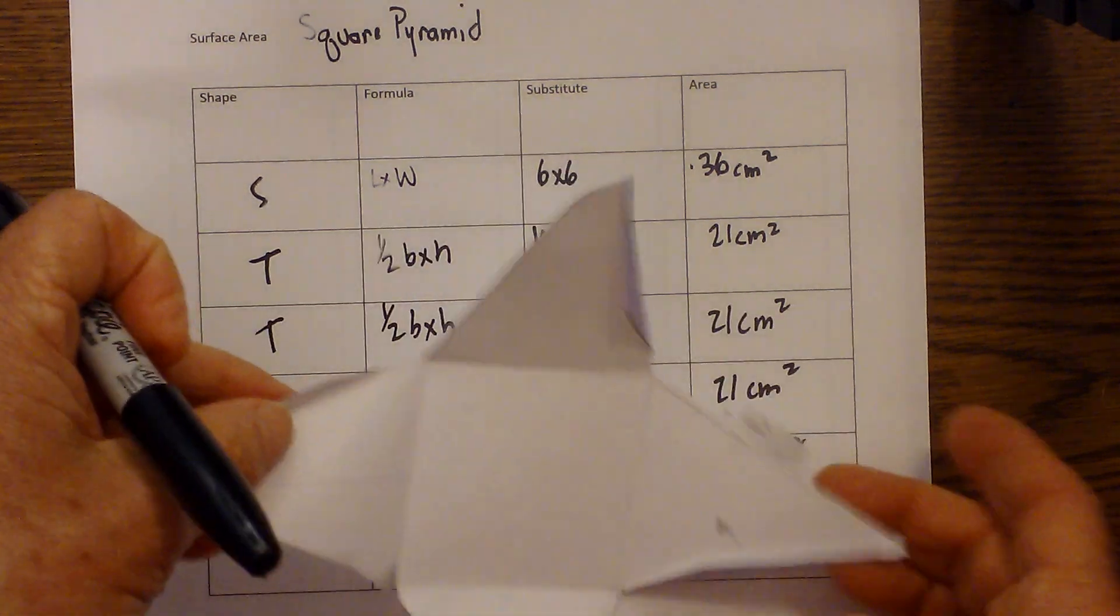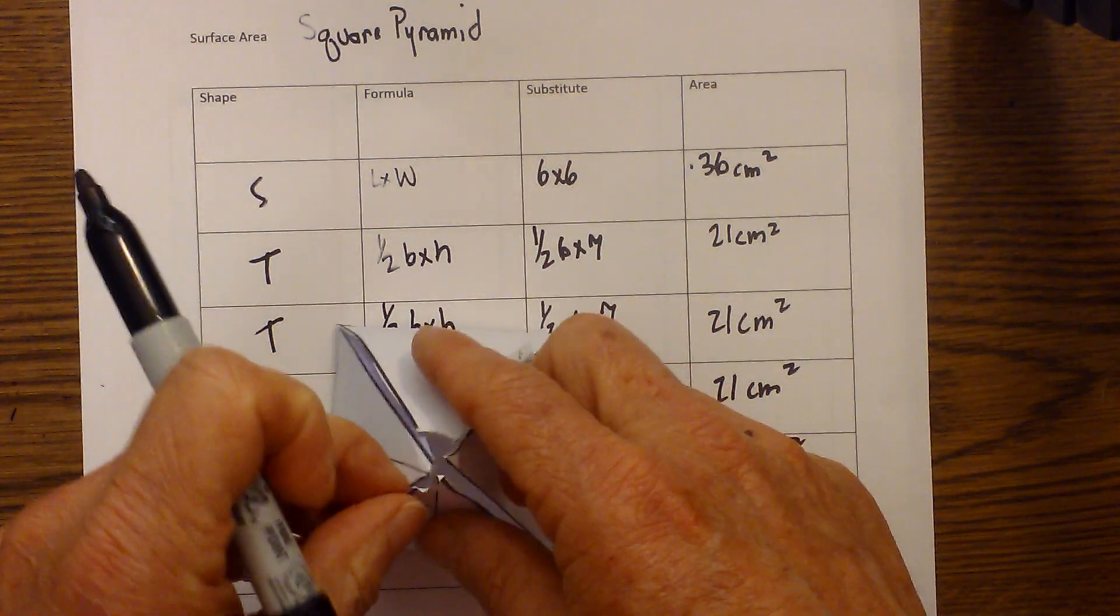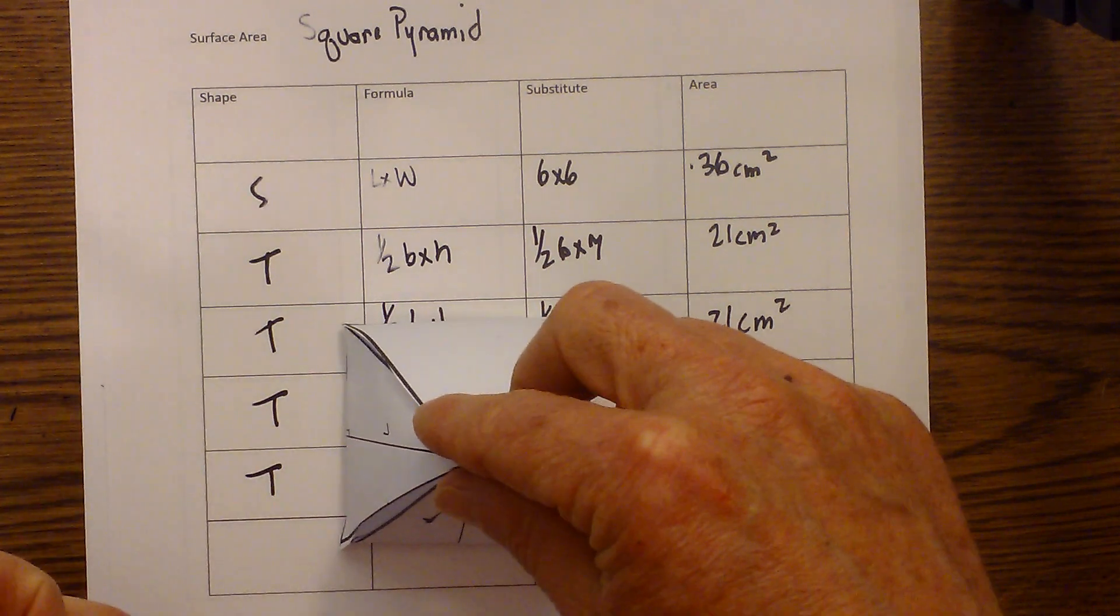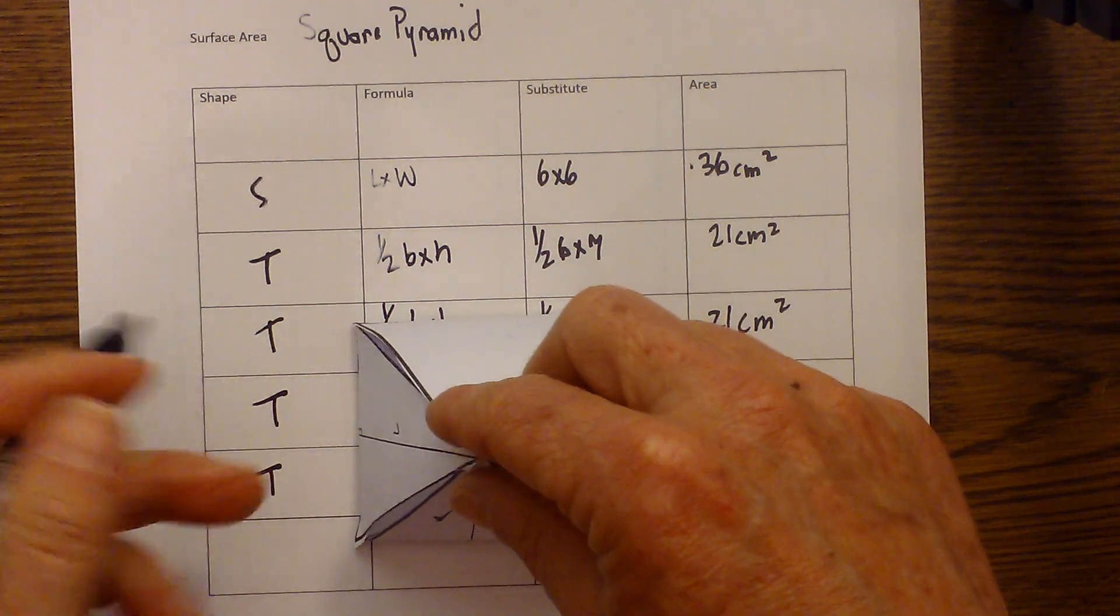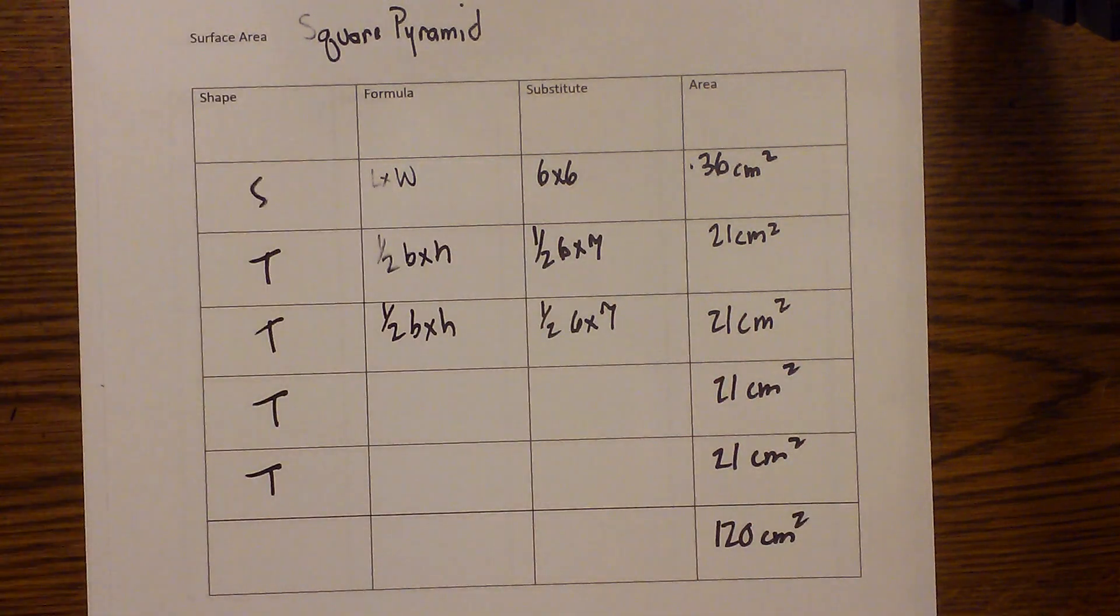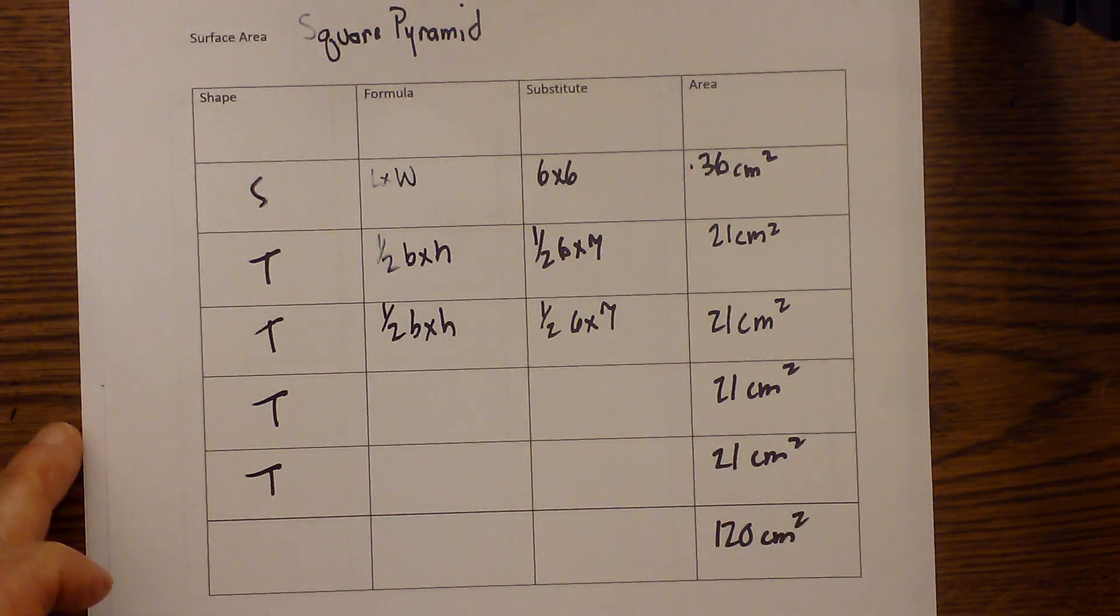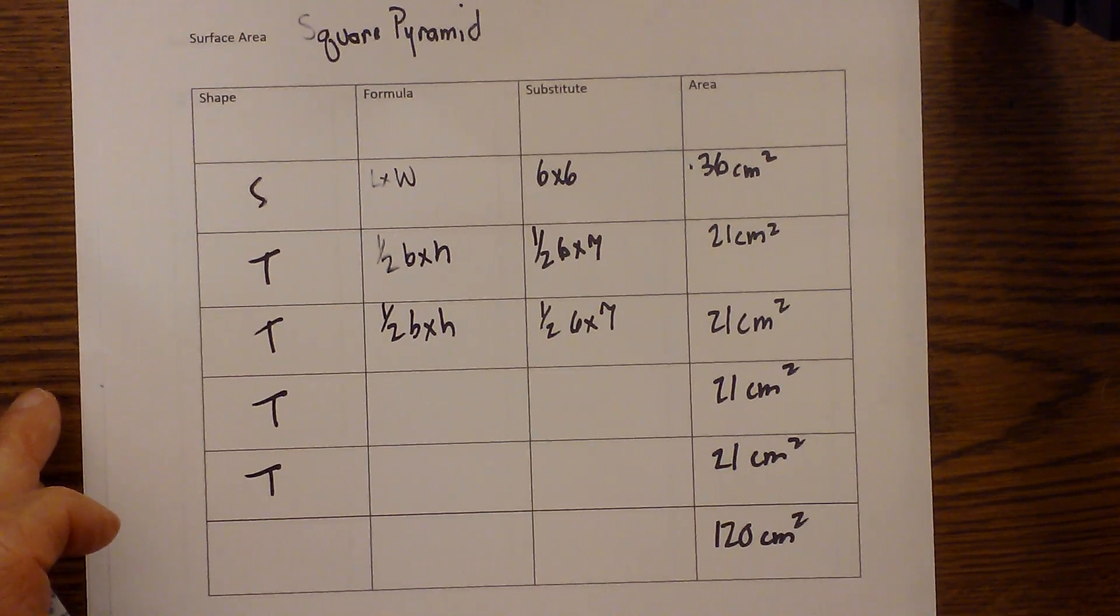So again, square pyramid. You fold it back up like you did before. Here's what it looks like. Okay, and that's our area. I hope that helped. And Moomoo Math uploads a new math and science video every day. Please subscribe and share. Thank you.